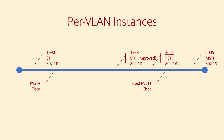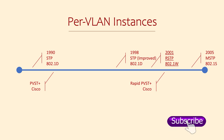RSTP takes a lot of Cisco's improvements, like better timers, port roles, and other features, and makes them standards. So RSTP is the vendor-neutral improvement on spanning tree. Cisco's implementation of this is called per-VLAN rapid spanning tree. This means that Cisco's enhanced version of RSTP is aware of VLANs, while the official version of RSTP is not.